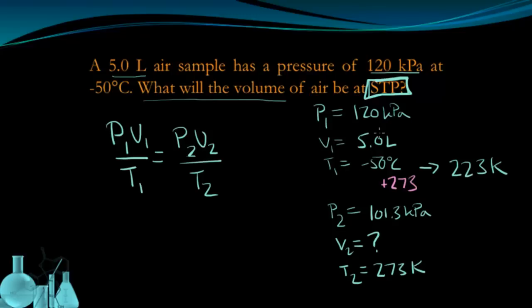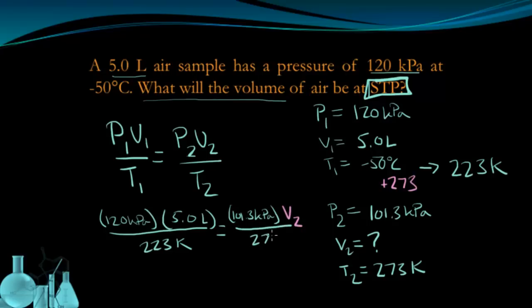Now that I've established what my variables are, I can go ahead and plug them into the equation. So I have 120 kPa times 5 liters divided by 223 Kelvin as the initial temperature, and that's equal to 101.3 kPa times V2, which I don't know, over 273 Kelvin. If I now solve this equation, I'm going to see that V2 is equal to 7.3 liters. This is the new volume rounded to two significant figures.